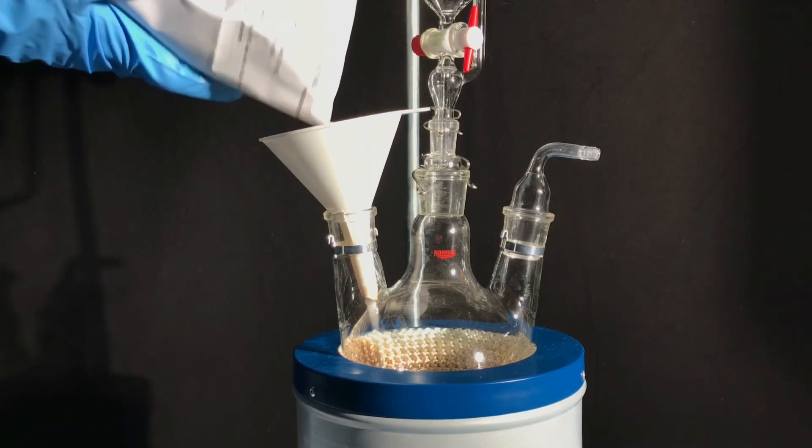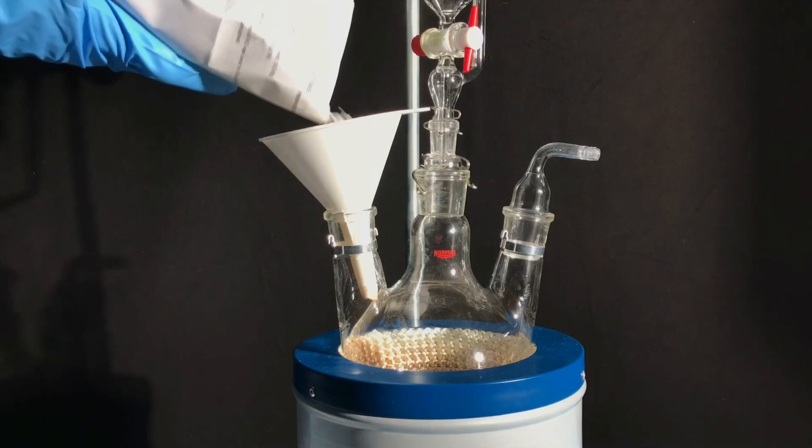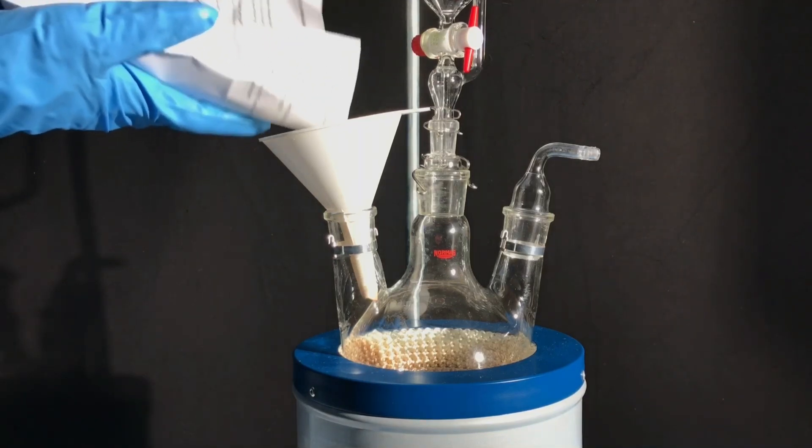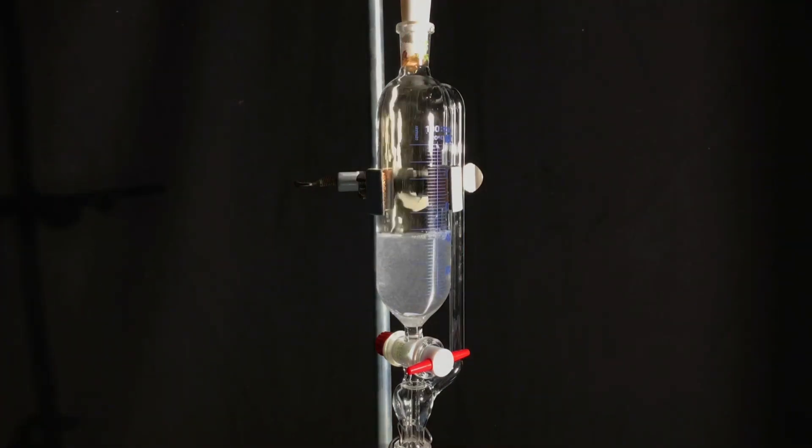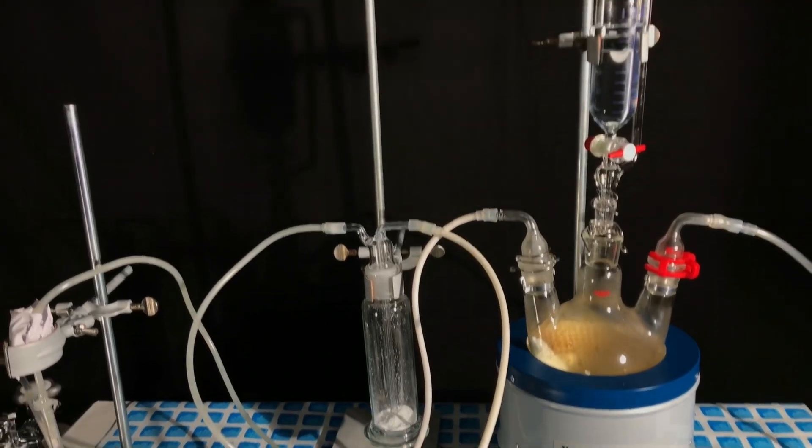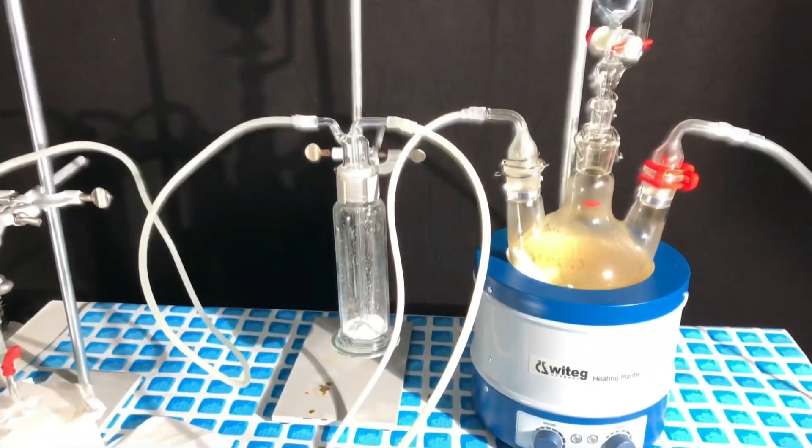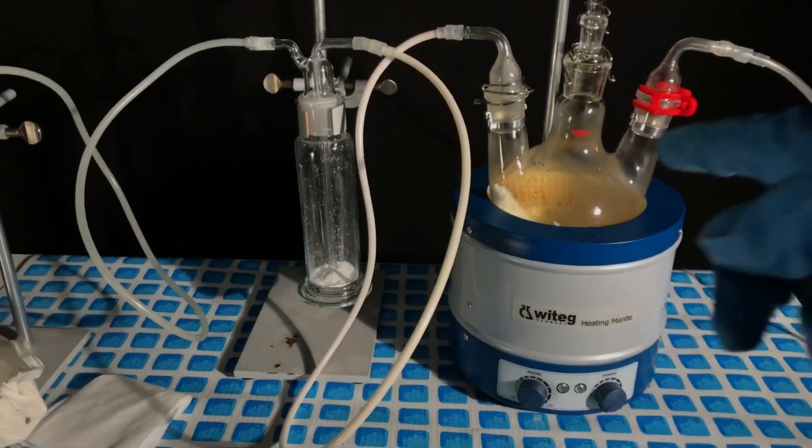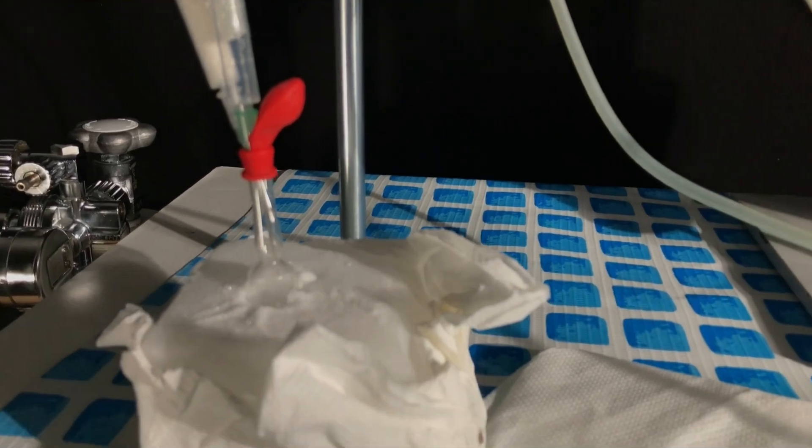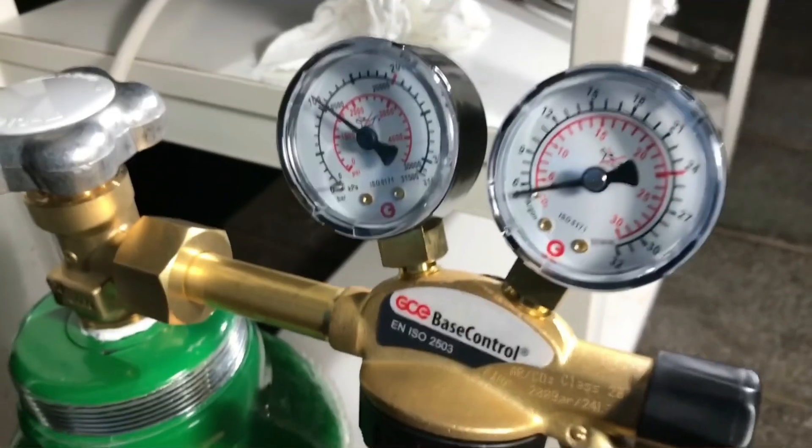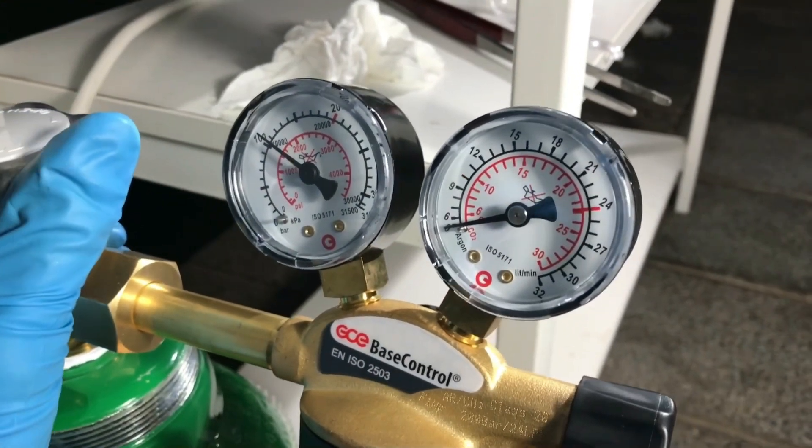We started off the preparation by adding the sodium nitrite to a three neck round bottom flask. The pressure equalizing addition funnel was filled up using 49% sulfuric acid. Here you can see the entirety of the apparatus. Three neck round bottom flask containing sodium nitrite with the addition funnel on top of it, a washing bottle containing phosphorus pentoxide as a drying agent and this ampoule with two syringes stuck into it.